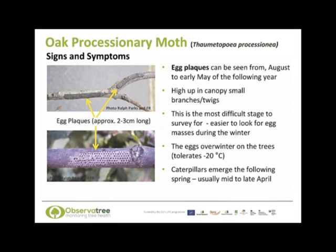The eggs are laid as egg plaques, approximately three centimetres long, and are laid on twigs between August and May the following year. Usually they are on small branches and twigs high up in the canopy, which makes this the most difficult stage to survey. It is a little easier to look for the egg plaques during the winter when the leaves are absent from the trees, but you would probably need binoculars. The eggs can overwinter on the trees and can tolerate temperatures as low as minus 20 degrees centigrade.